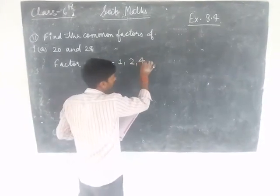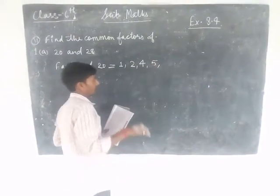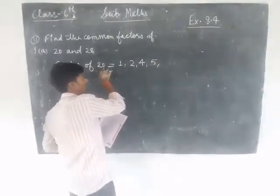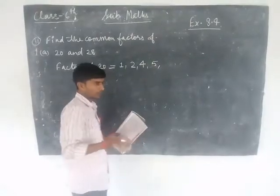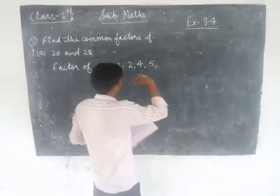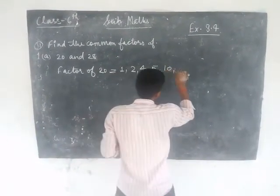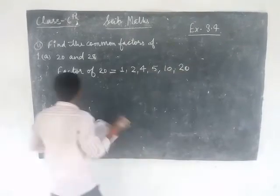After that we check 4 and 5. The last digit is 0, so 20 is divisible by 5. So the factors of 20 are 1, 2, 4, 5, 10, and 20.